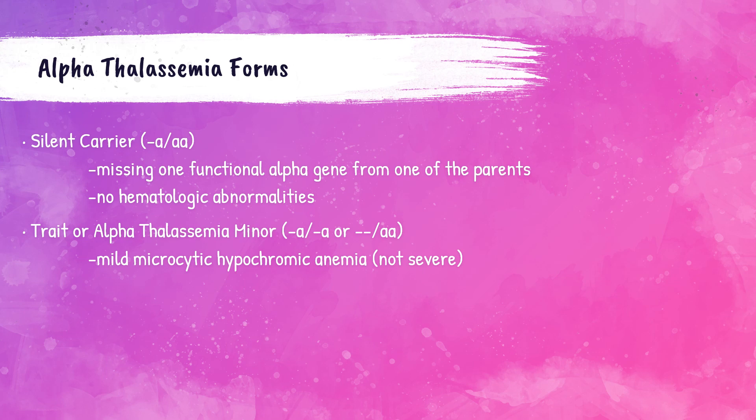Alpha thalassemia minor, also referred to as alpha thalassemia trait, can either be -a/-a or --/aa. In either case, the patient is missing two alpha chain genes. This does not cause severe symptoms, only a mild microcytic hypochromic anemia with a low MCV and MCHC value.